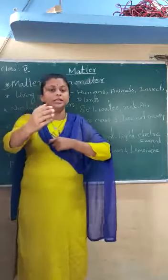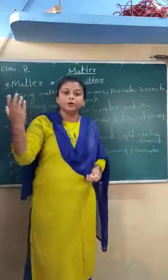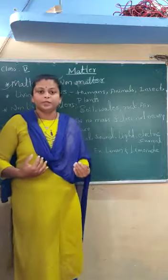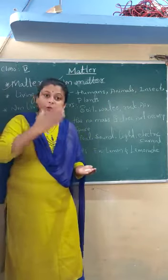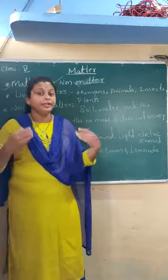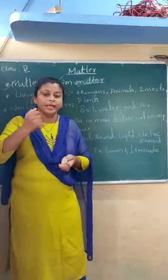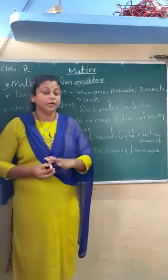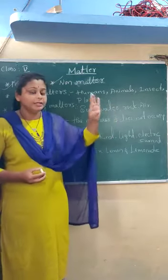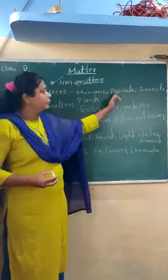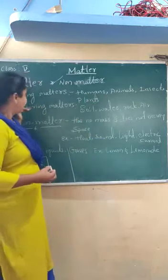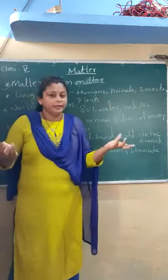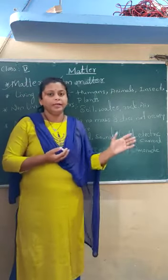Air — we may not see it, but it occupies space. For example, sitting in a room, air occupies the entire room, and if you weigh air it does have some weight. So air is also matter. To summarize: living matters are humans, animals, insects, and plants; non-living matters are soil, water, rock, and air.